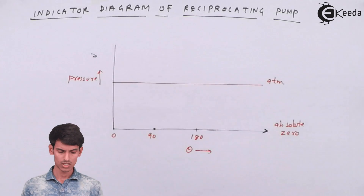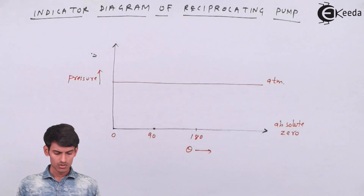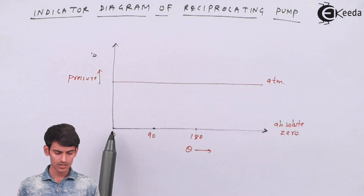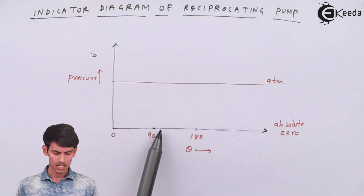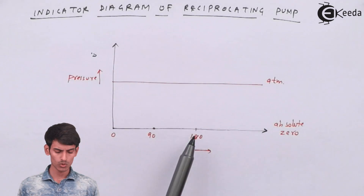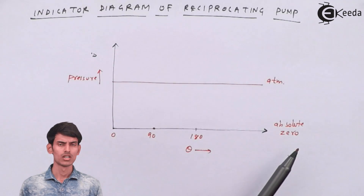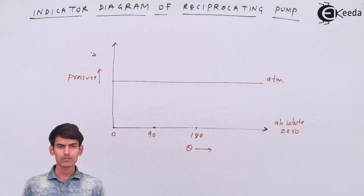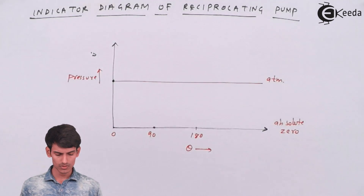As you can see, I've drawn two lines: a vertical line representing pressure and a horizontal line representing the stroke angle theta. The origin is zero pressure and zero angle. At zero degrees the piston is at the extreme left side; the angle increases as the suction stroke progresses, ending at 180 degrees. The horizontal line represents absolute zero pressure — perfect vacuum — and there is also a line representing atmospheric pressure.